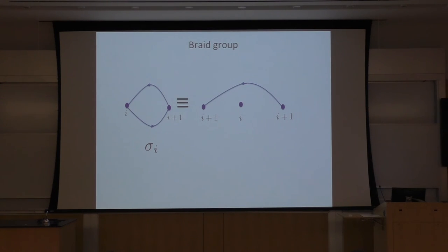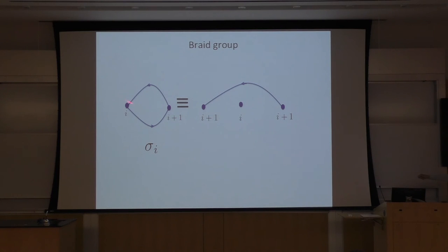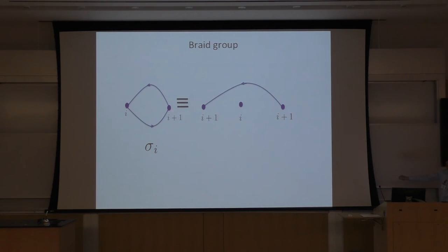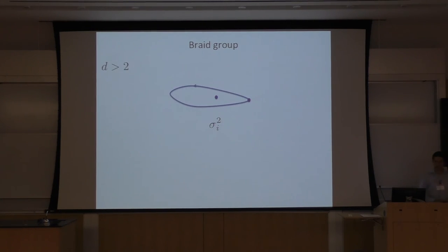If I add one more constraint — sigma_i squared equals one — the braid group reduces to the famous permutation group. We know that the permutation group has only two one-dimensional representations: the trivial representation, which gives us bosons, and the non-trivial one-dimensional representation, which gives us fermions — a minus one sign on exchange. But for d equals two, sigma_i squared can be other than one. When we study this group, we may get other representations — we may get non-abelian representations, for example.